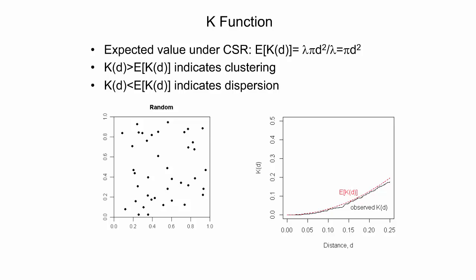The figure to the left shows a random point pattern. The black line in the diagram to the right plots the observed K function for that point pattern. It follows closely the values of the expected K function under complete spatial randomness, shown as the red dashed line. Therefore, it does not indicate either clustering or dispersion in the observed point pattern.